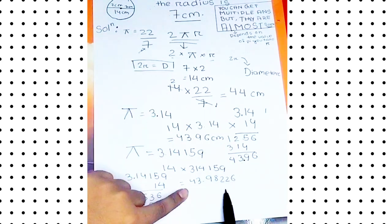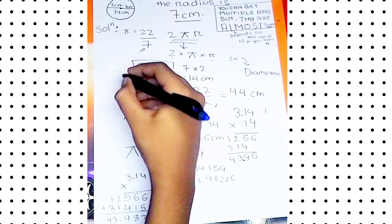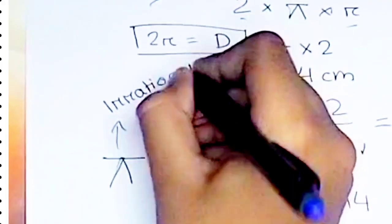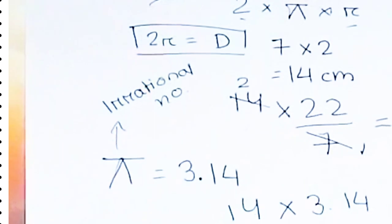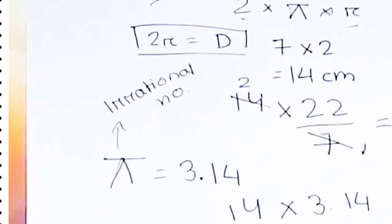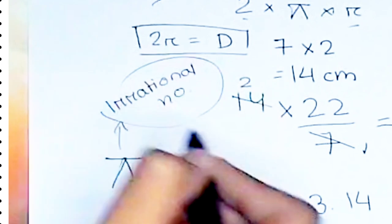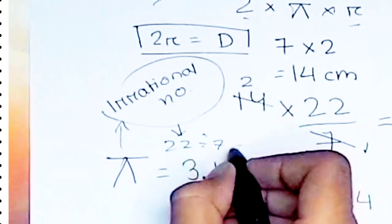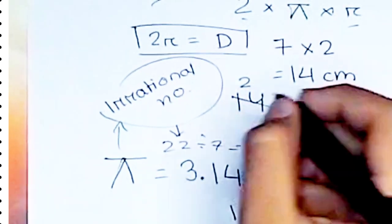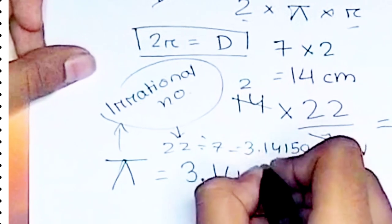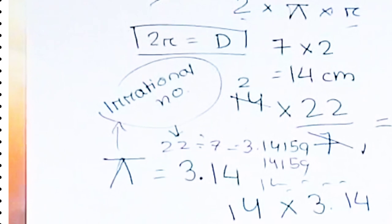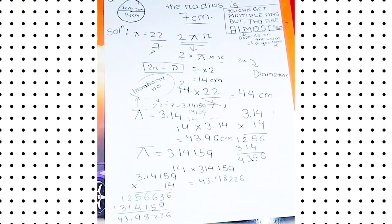As you know that pi is an irrational number. I know that all of you know what is irrational number. That means if you divide 22 divided by 7, the answer will be 3.14159265... and it will continue like that and it will never end.